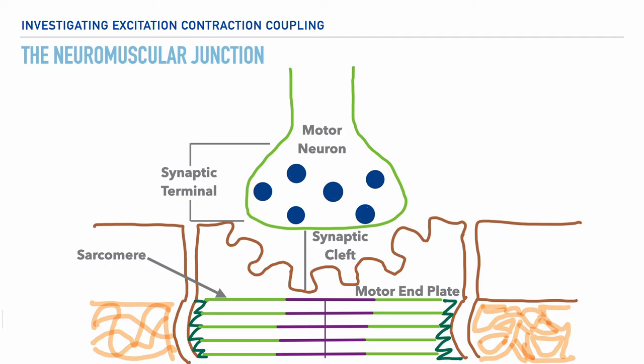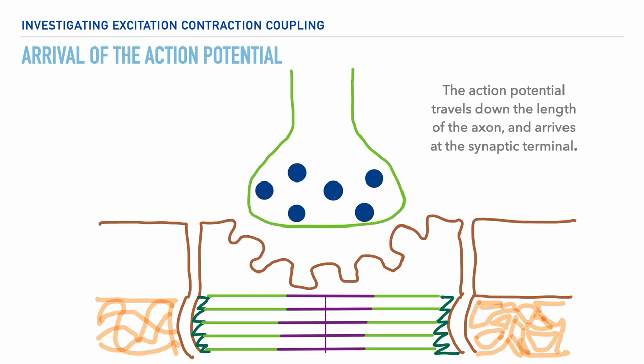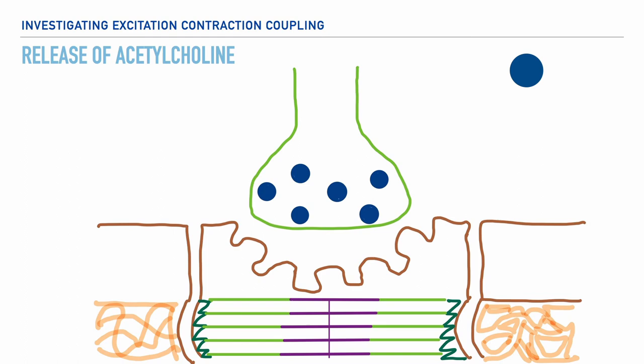And to both sides of the sarcomere, we have the sarcoplasmic reticulum. Now going back up to our synaptic terminal, we'll see structures referred to as synaptic vesicles. The key to keep in mind is that neurons control skeletal muscle fibers through the production of an action potential. This process begins by an action potential traveling down the length of the axon and arriving at the synaptic terminal.